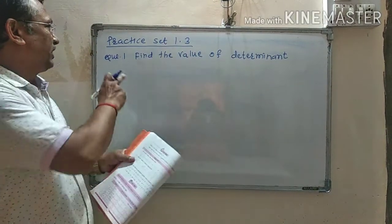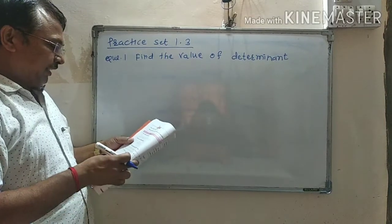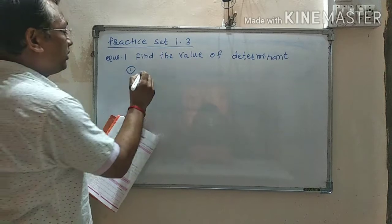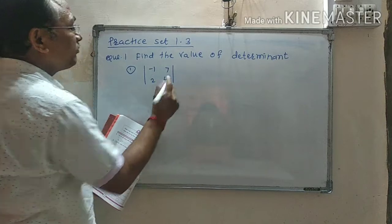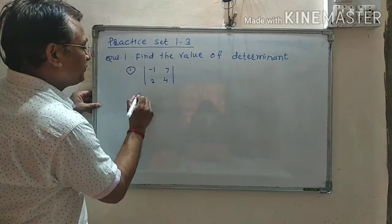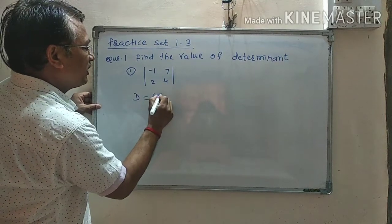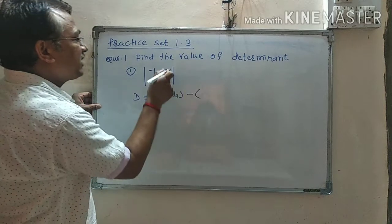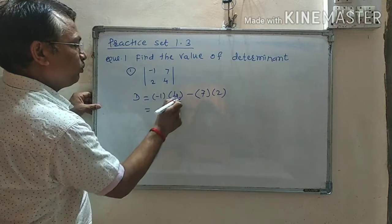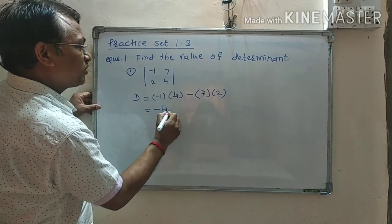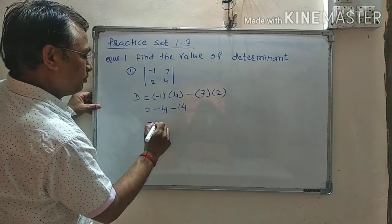Find the value of the determinant. Here determinant D is equal to, open, cross multiplication: minus 1 into 4 minus 7 into 2. It is equal to 4, minus 4 minus 7, 14. It is equal to 14 minus 4, minus 18.